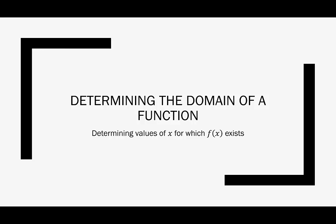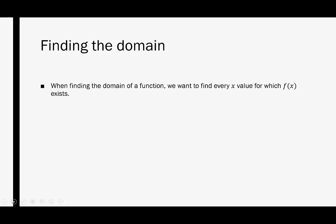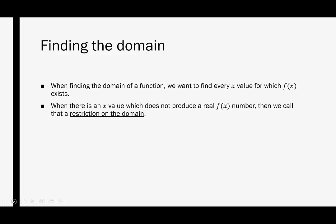Basically, we're looking for the values of x for which f of x exists. When finding the domain of a function, we want to find every x value for which f of x exists and is a real number. When there is an x value which does not produce a real f of x number, we call that a restriction on the domain.